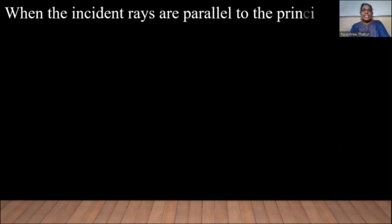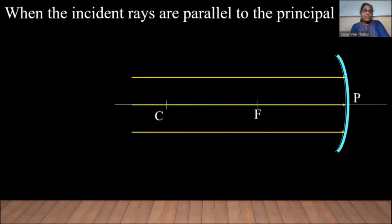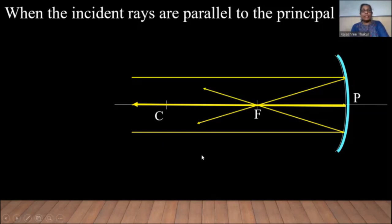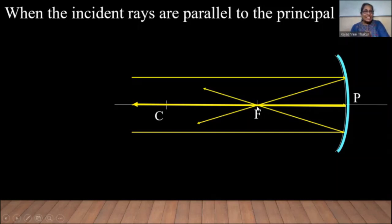If the rays are incident parallel to the principal axis, you can see that after reflection the rays pass through the focus. That means if the object is at infinity — at infinite distance — the rays are almost parallel to the principal axis and after reflection they pass through the focus. When the object is at infinity, the image is formed at the focus and it's a highly diminished image. Now let us perform an experiment.